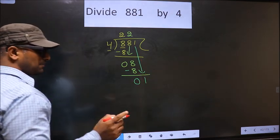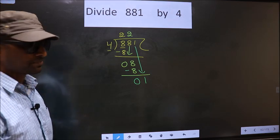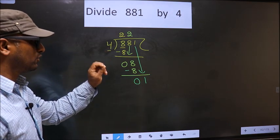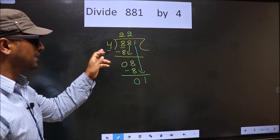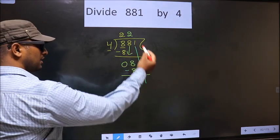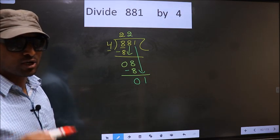This is where the mistake happens. And the mistake is this. Here we have 1. Here 4. 1 is smaller than 4. So what many do is they put a dot and take 0 here. Which is wrong.